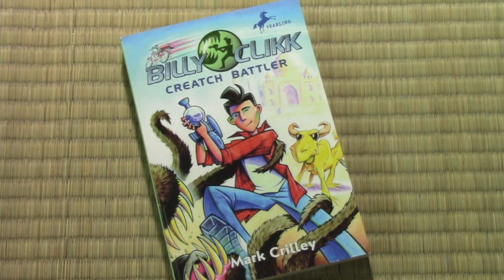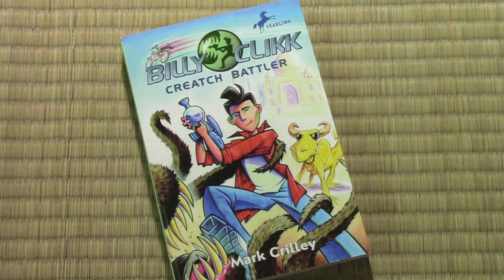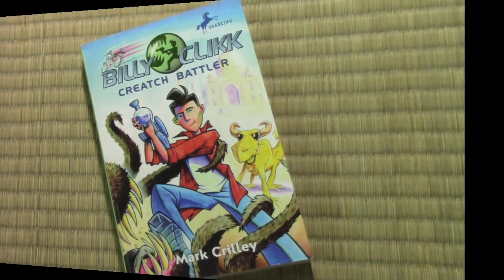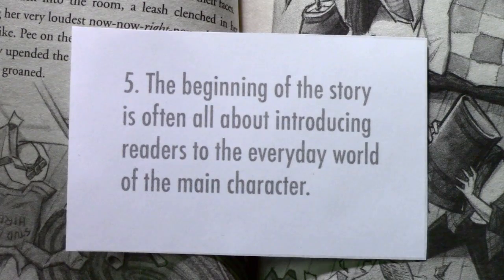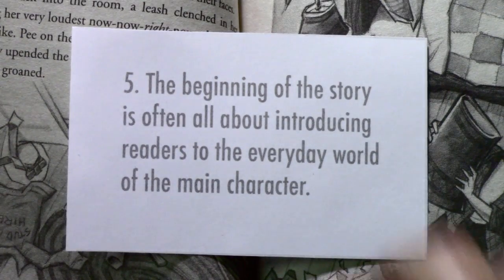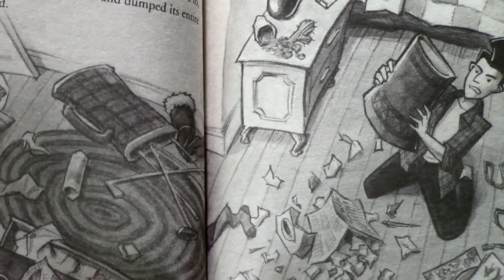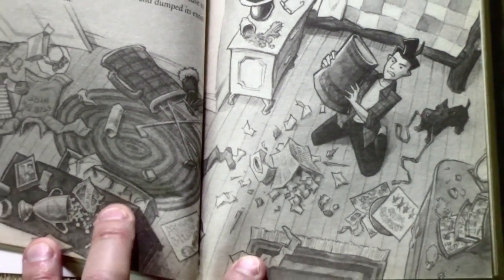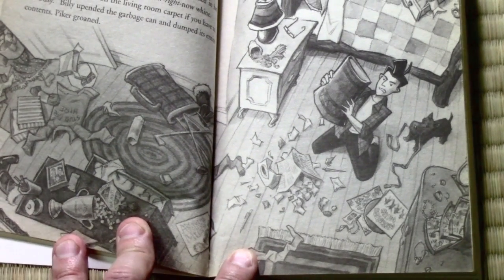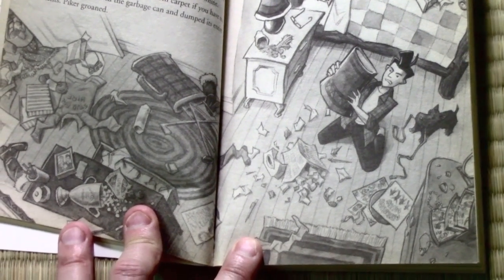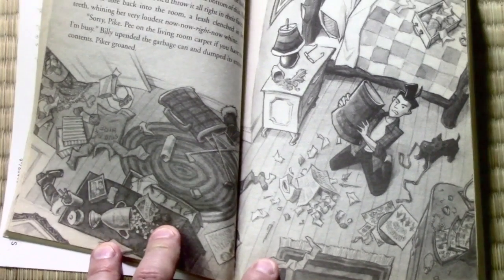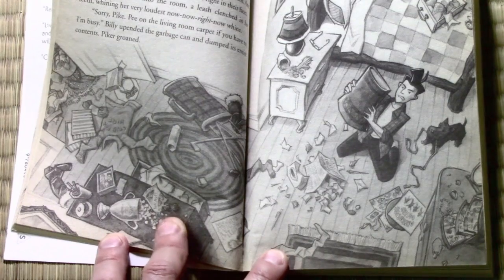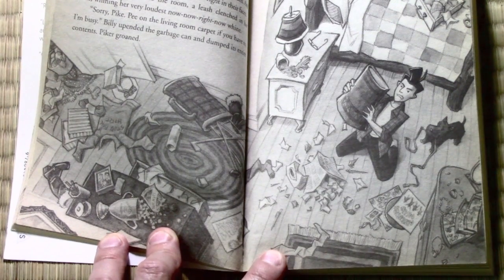Now we move on to Billy Clck: Creech Battler — certainly one of my lesser-known series, with only two books. It was my third big project and I put a lot of time into launching it. Number five: the beginning of a story is often all about introducing readers to the everyday world of the main character. In the very first Billy Clck book, Billy begins to uncover evidence that his parents have an alternative identity, and that eventually becomes the adventure. But we don't have any sense of what the adventure is if we don't first get to know the ordinary, slightly boring everyday life of the character.